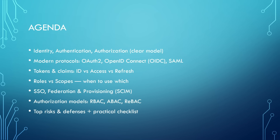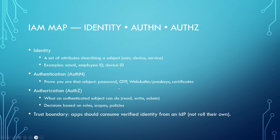Here is the plan: identity, authentication, authorization — simple clear definitions. Modern protocols: OAuth2, OpenID Connect, and SAML, and when to use what. Tokens and claims: ID, access, and refresh tokens. Roles versus scopes. SSO, Federation, and provisioning with SCIM. Authorization models, top risks and defenses, and practical checklists.